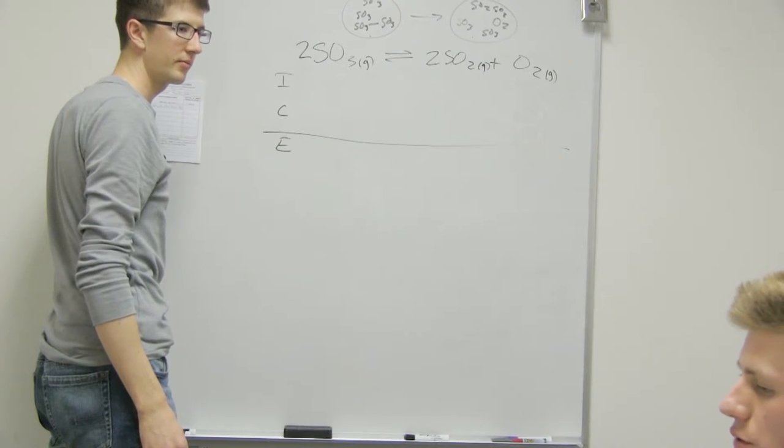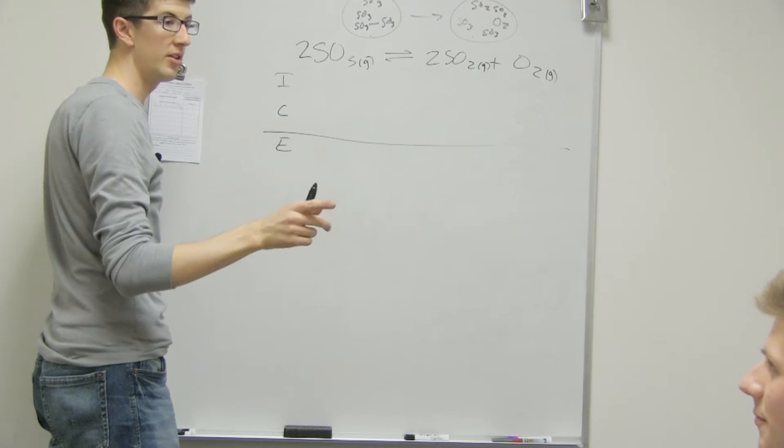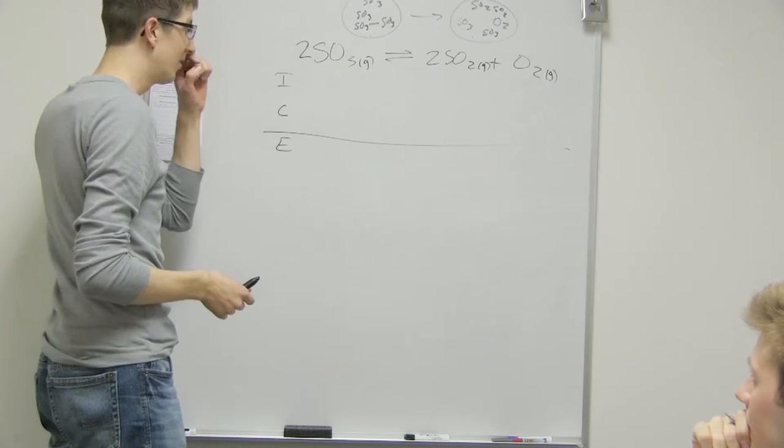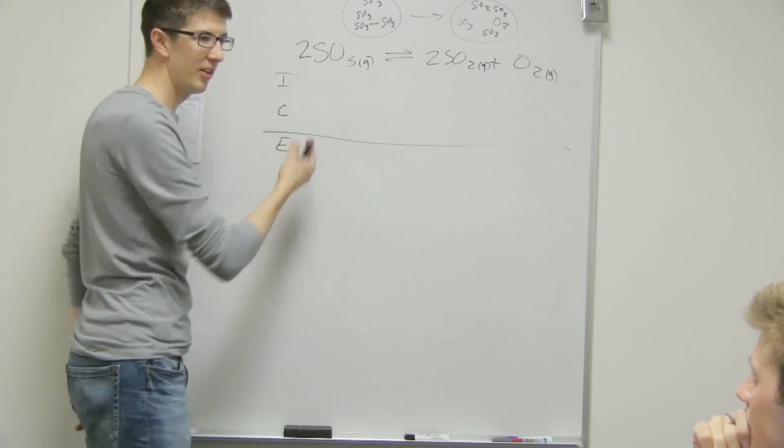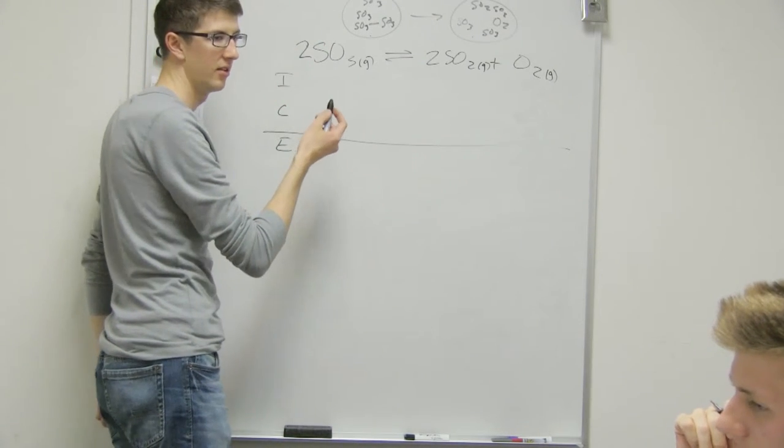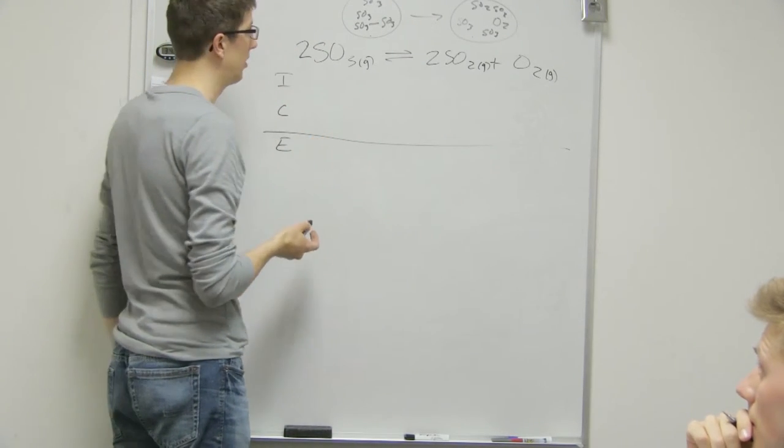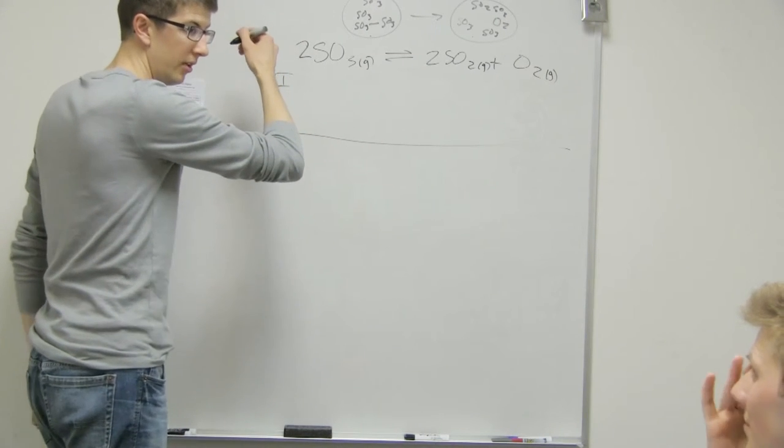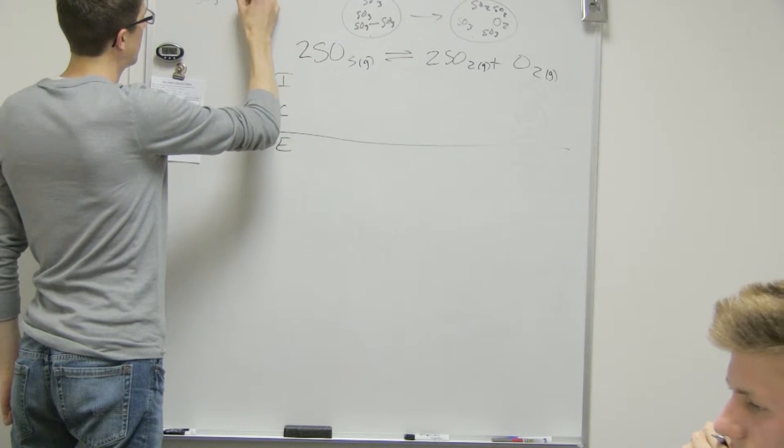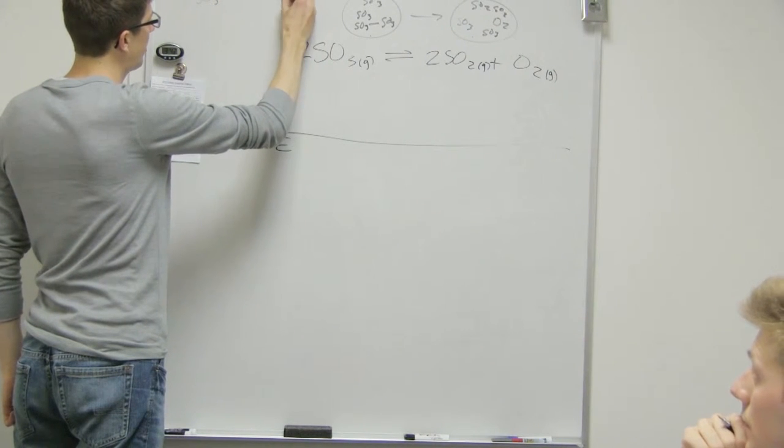So ICE tables shouldn't be all that confusing, right? The ICE table is usually not too bad. I understand, but now this is the part where the concepts come in with the math. Because we go, okay, well we had an initial amount of this, right? How much did we have? Do you want it in molarity or moles? Oh well it comes in moles first, right?